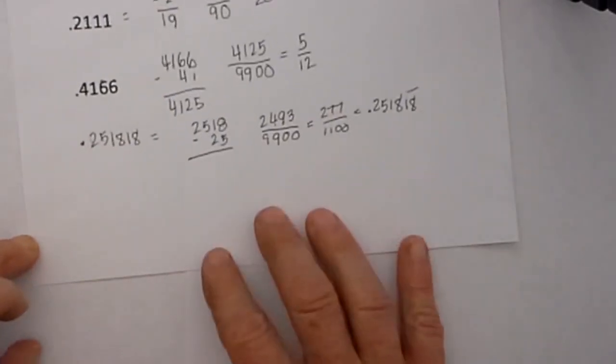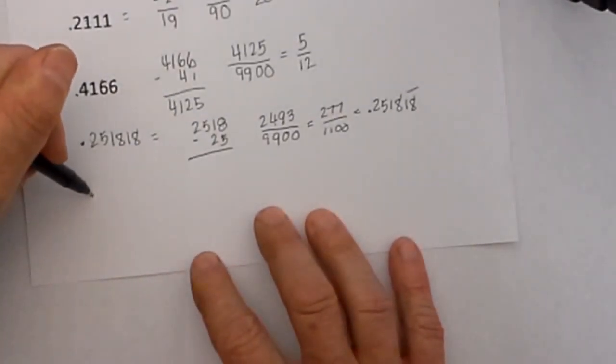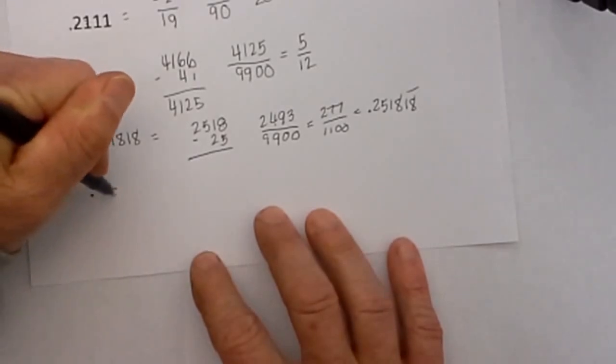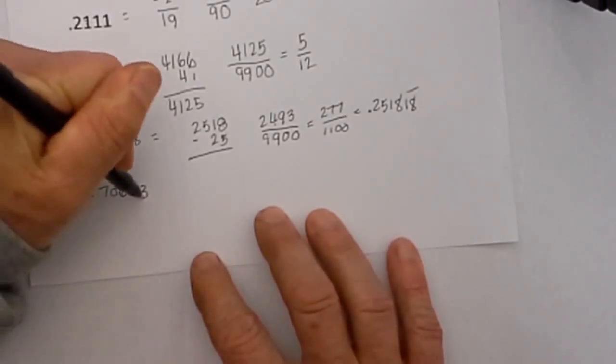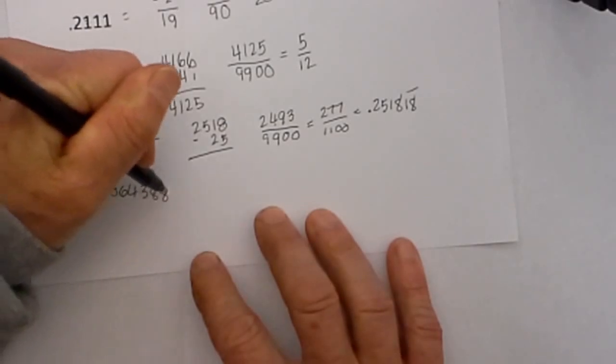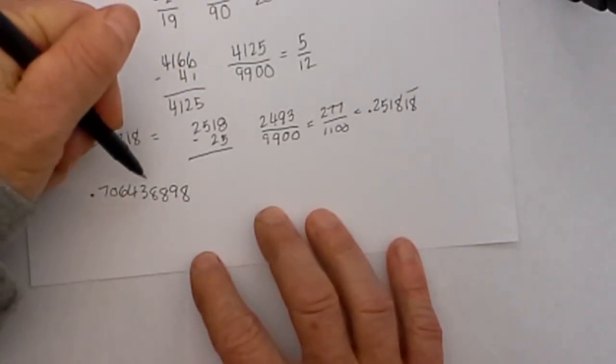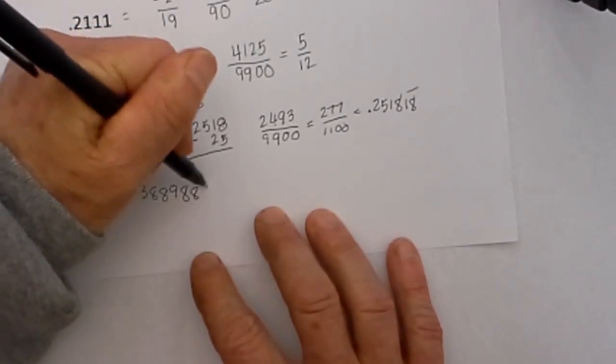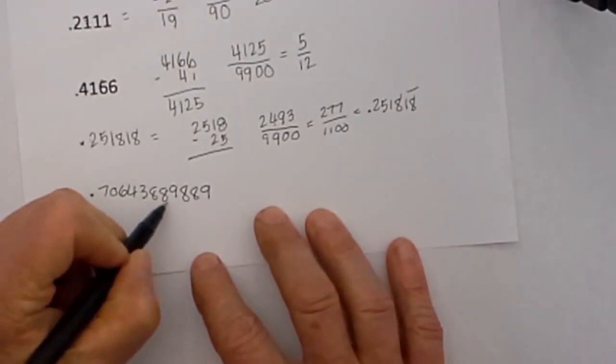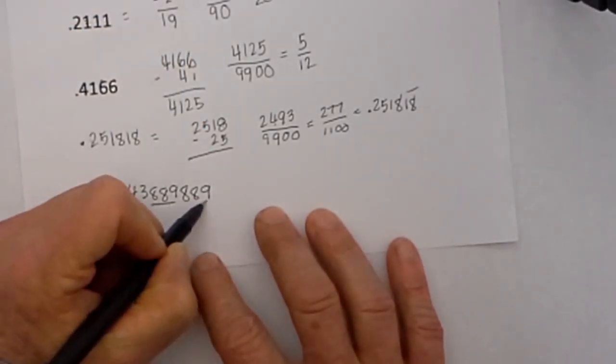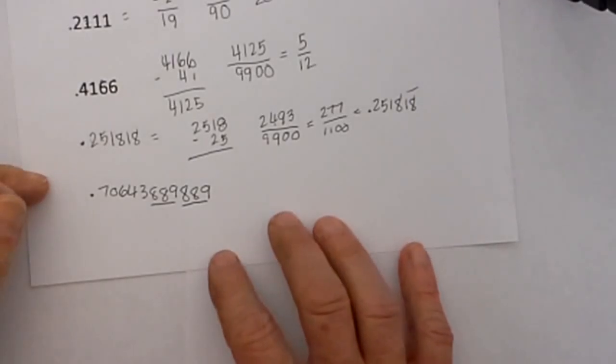I will even show you a crazy number here. Say you have a number like this .706438898 and 889 repeating. The repeating is 889. You can see it repeating twice. It even works for something like this.